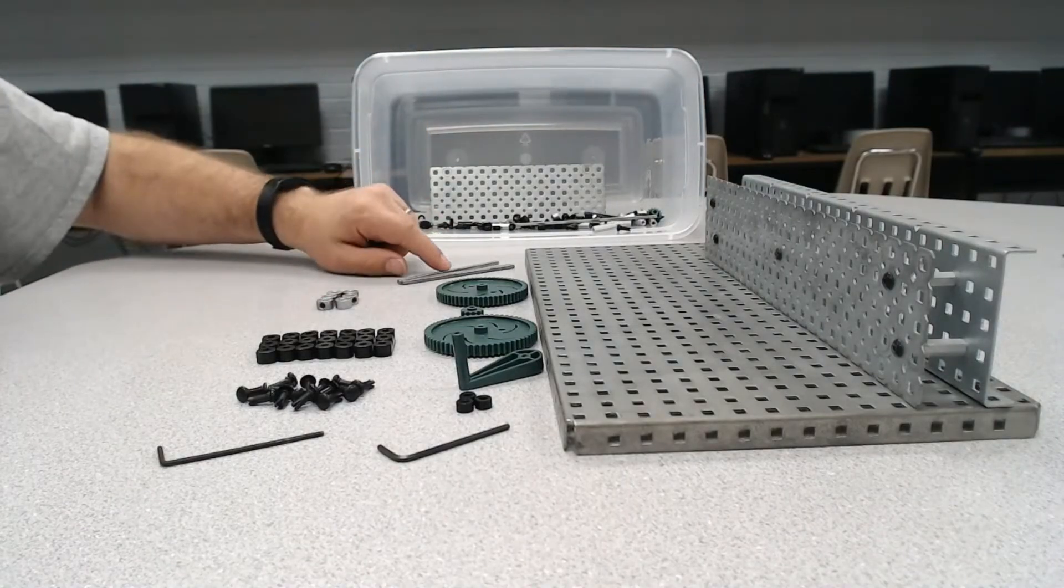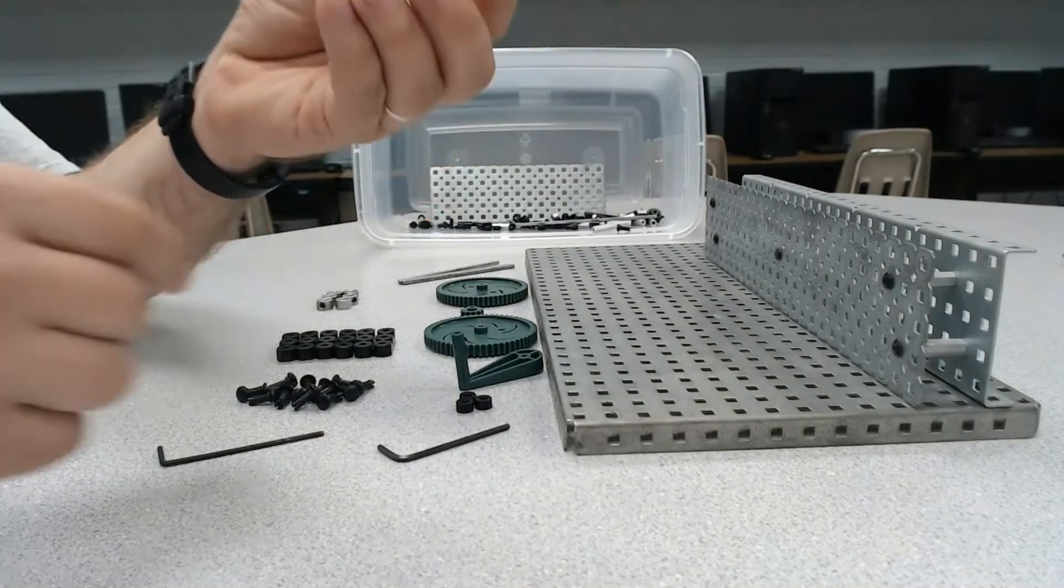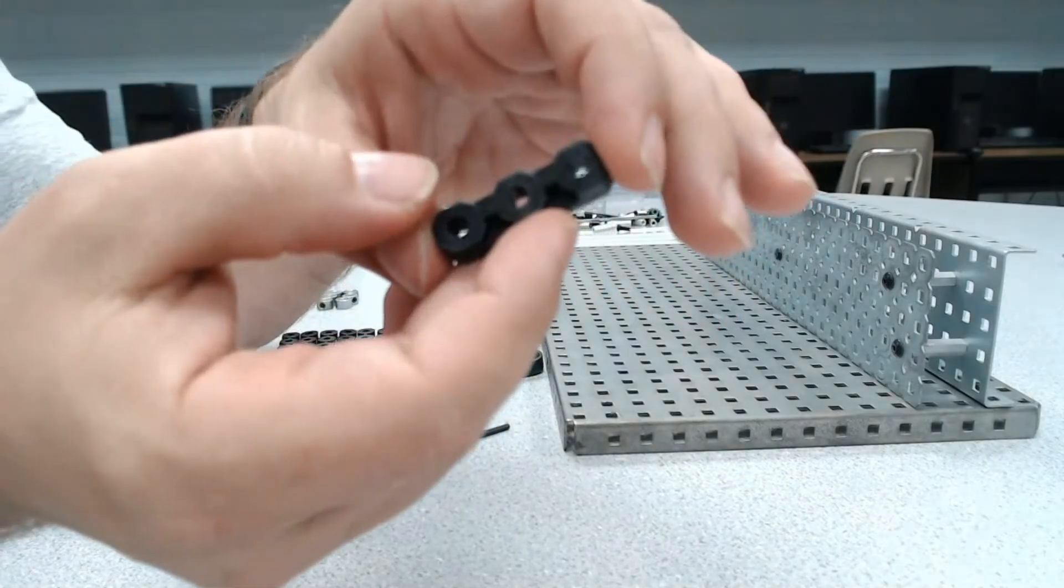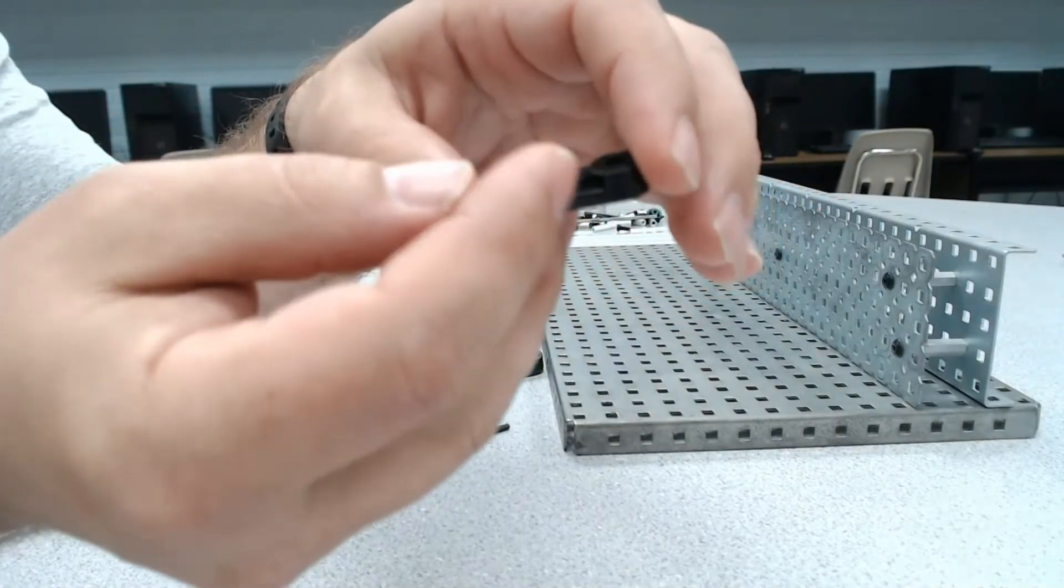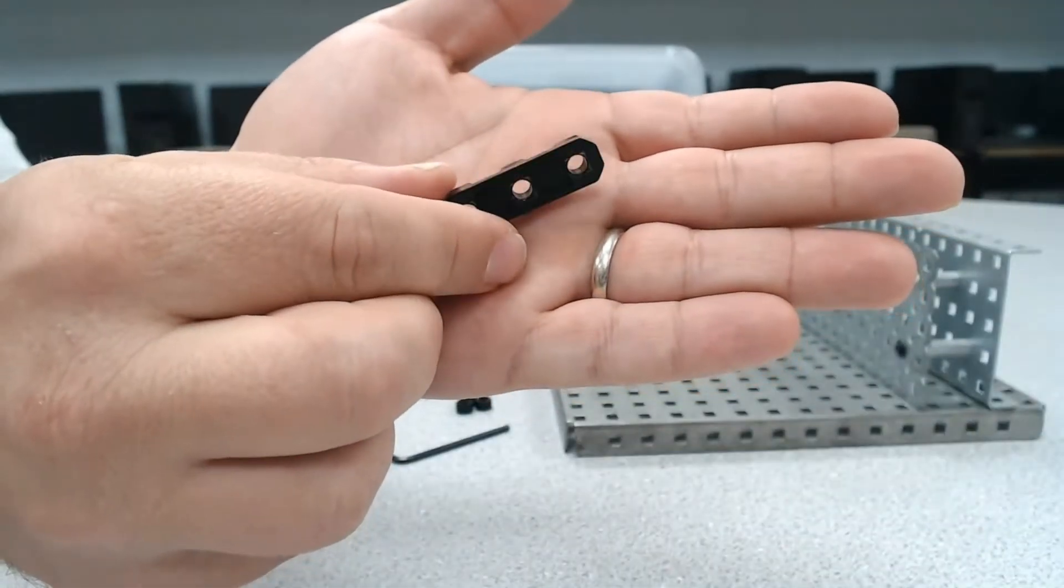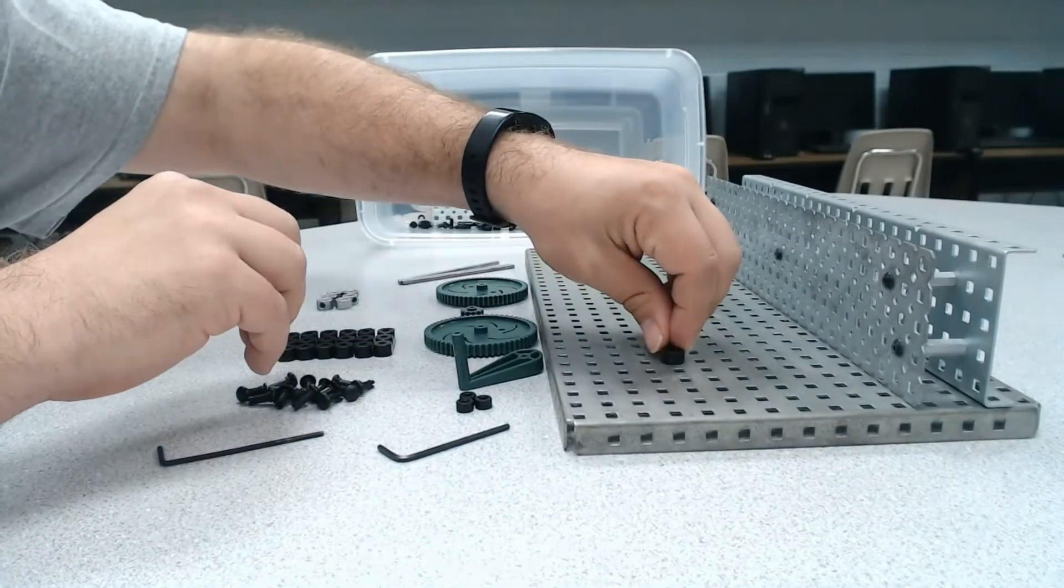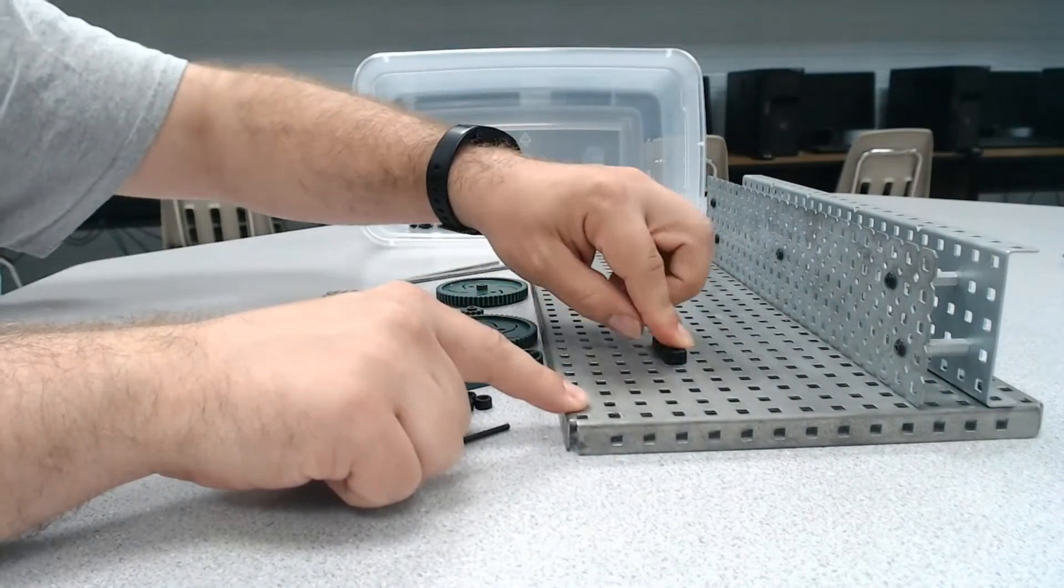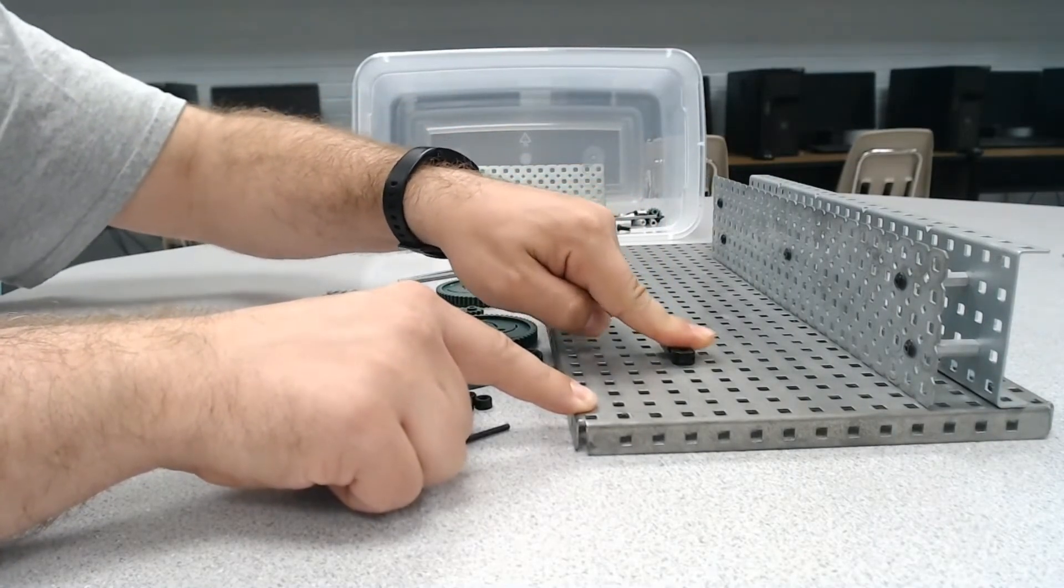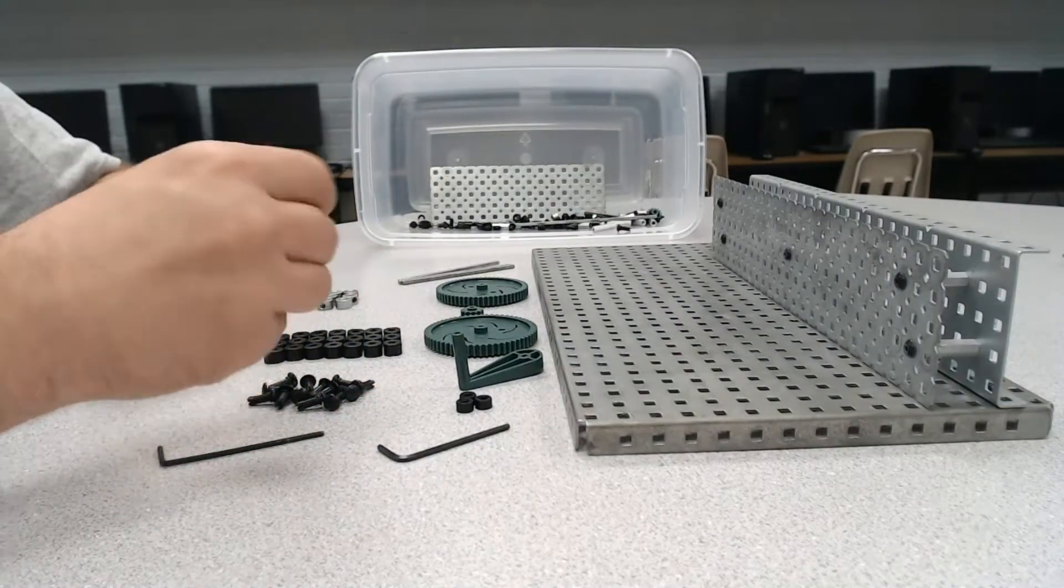Now for each axle, we also need two of these three hole spacers. The three hole spacers look like this. What's important to note is that this is the front. On the back here, we can see there are these little notches, and those notches fit into the holes on your metal. When they do that, this thing kind of helps hold it into place.